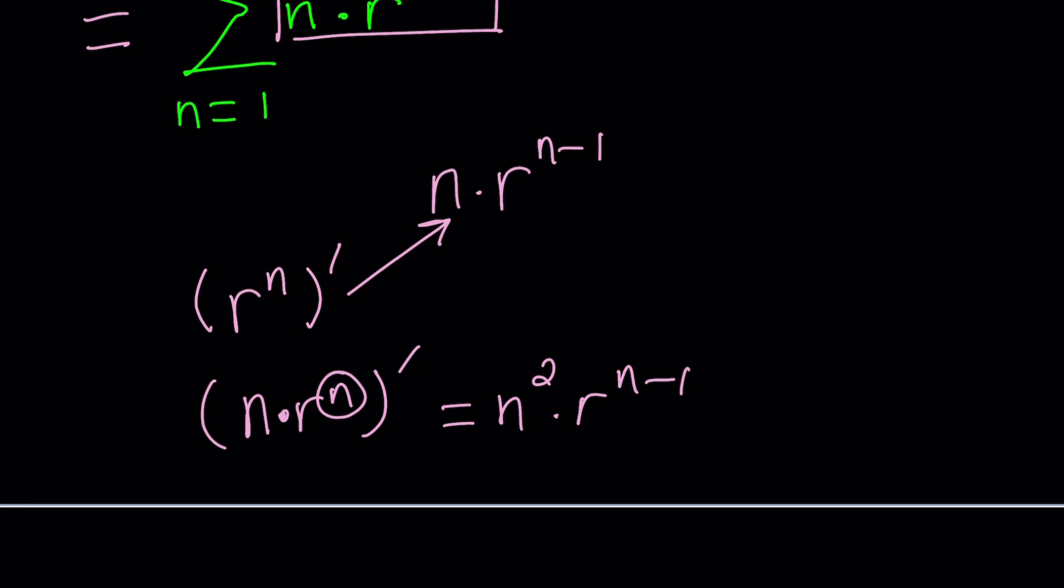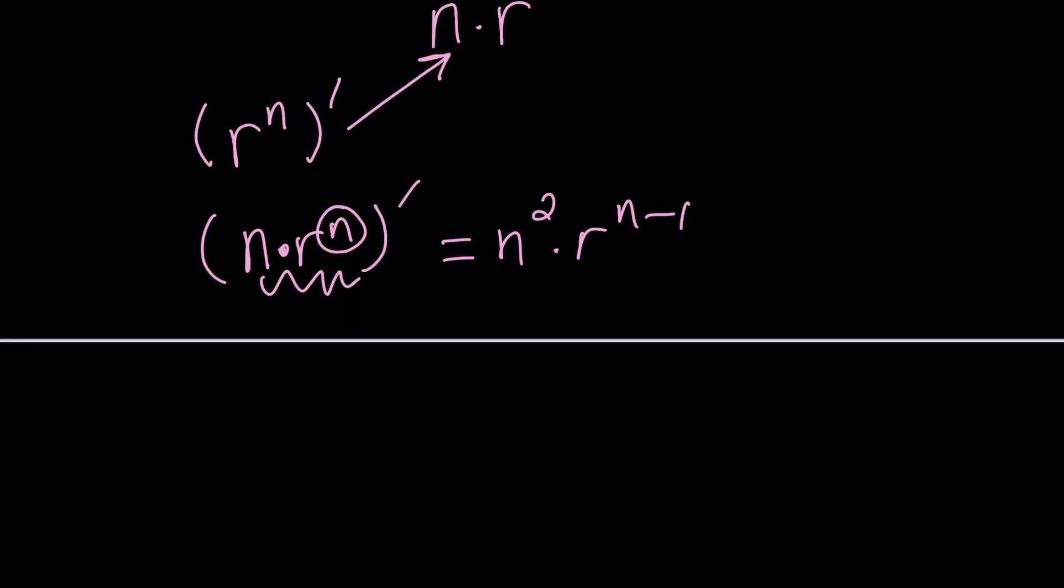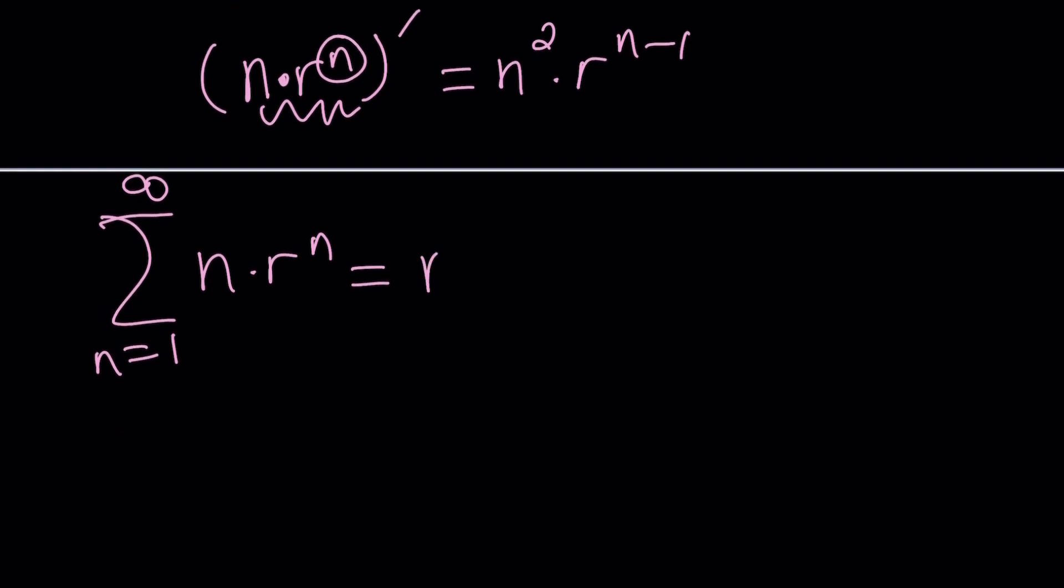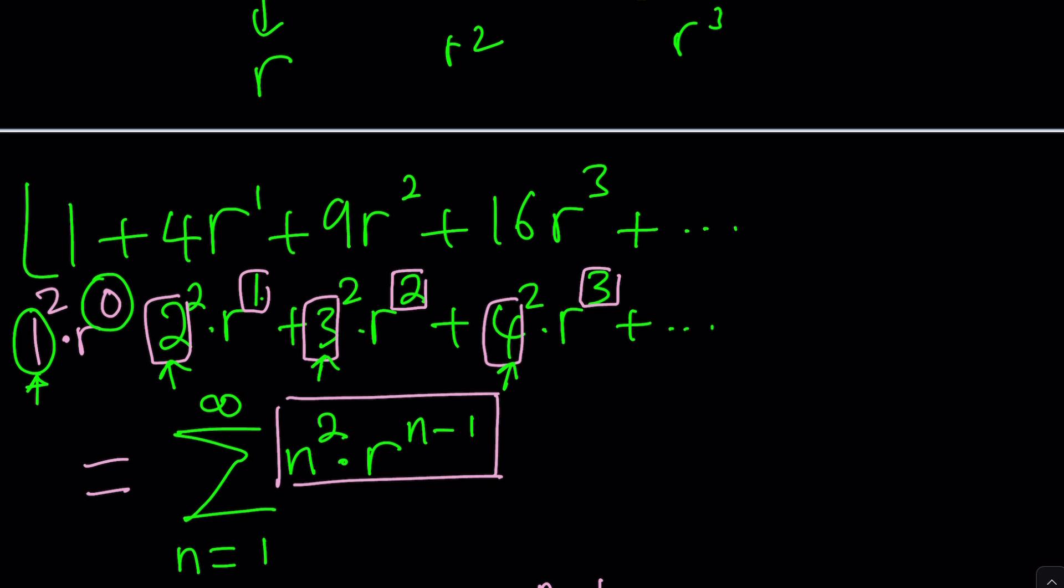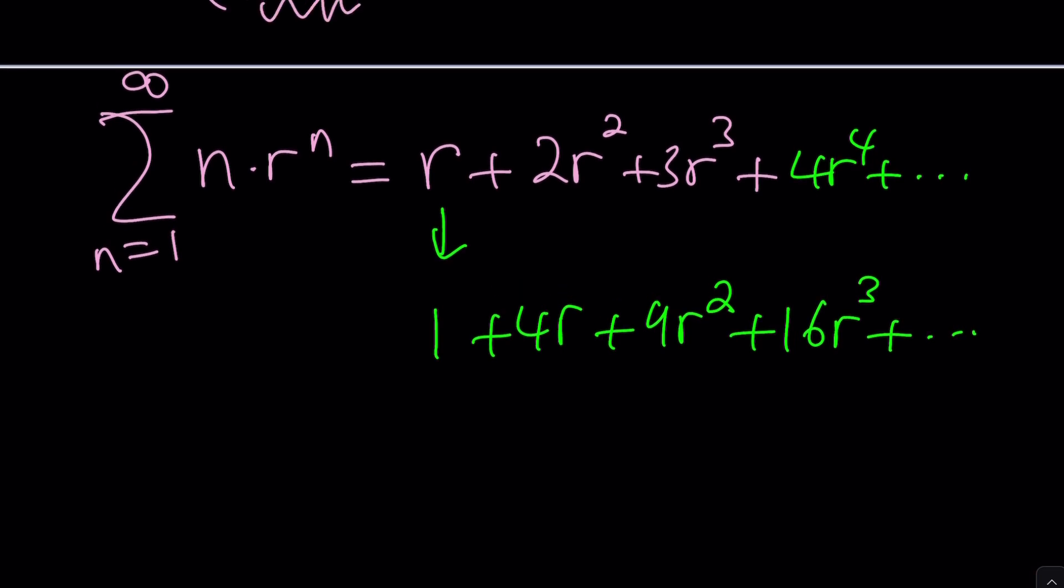It means you can go ahead and find the series expansion for this. n equals 1 to infinity, nR to the n minus 1. For n equals 1, this is going to be R to the first power, which is R. And then 2R squared, 3R cubed, so on and so forth. If you differentiate everything here term by term, you get 1 plus 4R plus 9R squared, and then 4R to the fourth becomes 16R to the power of 3. This is the derivative of something.